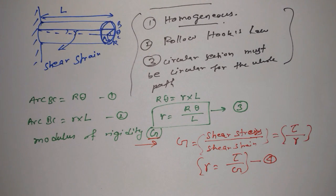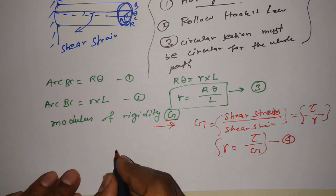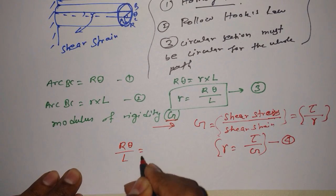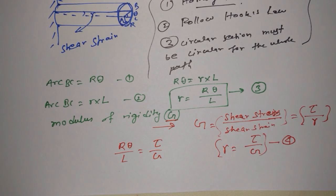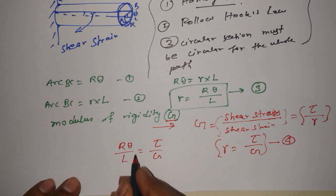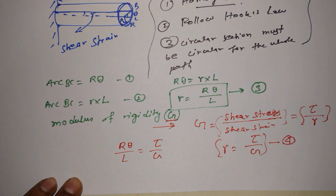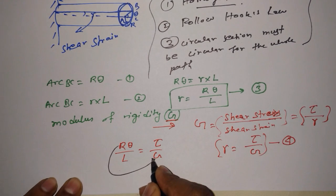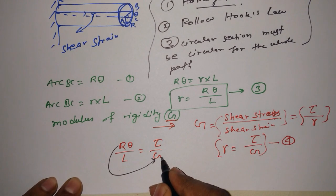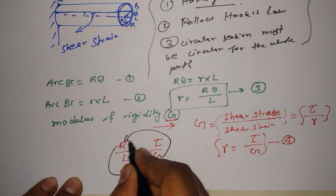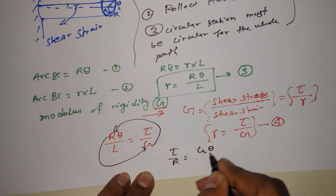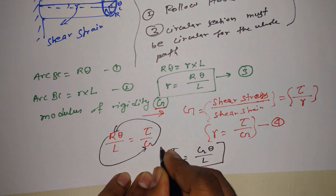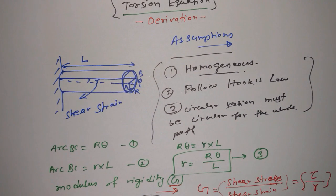Now, comparing equation 4 and equation 3, we can say that R·theta divided by L is equal to tau divided by G. Doing a little cross multiplication — R goes to one side and G goes to the other — what we get is: tau divided by R is equal to G·theta divided by L.